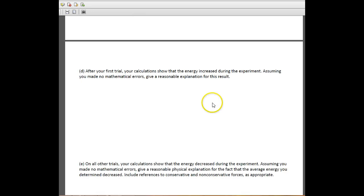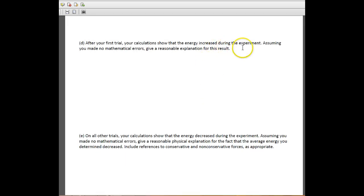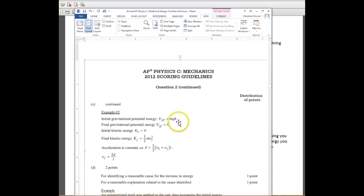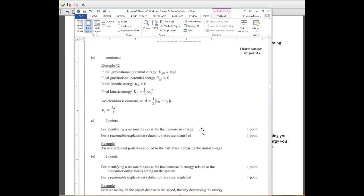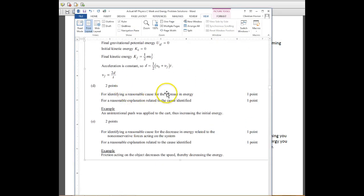After your first trial, they show that your energy actually increased during the experiment, which we know we can't have. They want to know what happened and then explain kind of why that would affect it. So for letter D, we just need to say something like you accidentally pushed the cart. There was a rubber band that was attached to the cart underneath you didn't see. There's a small motor.